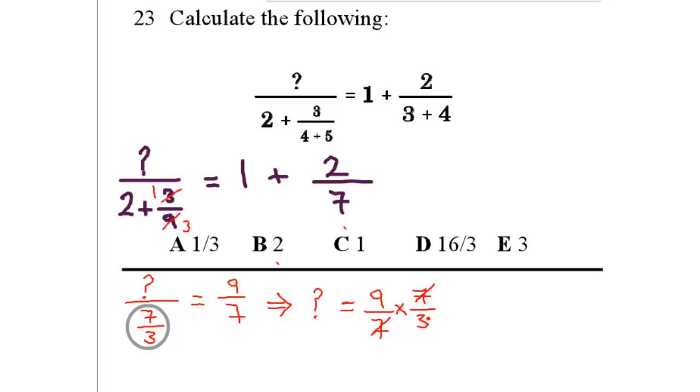Now here 7 and 7 are going to cancel out. 3 divided by 3 is 1. 9 divided by 3 is 3. So your answer is going to be E3.